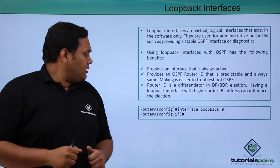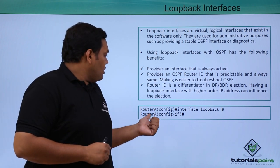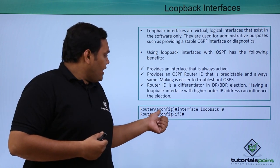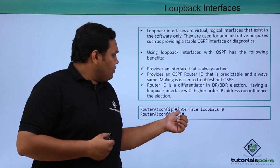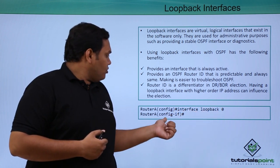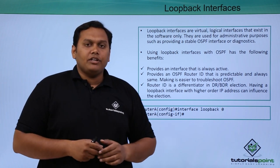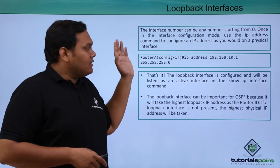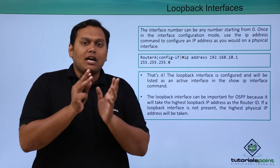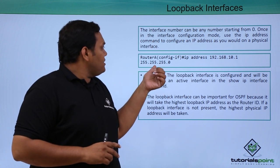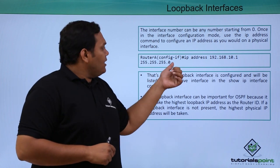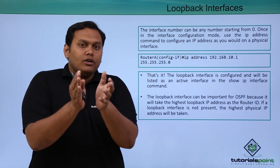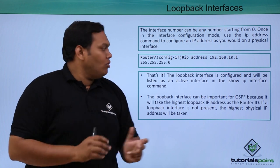Now let's look at how we configure the loopback interface IP address on a router. You enter global configuration mode and type 'interface loopback 0' — the interface number can be any number starting from 0. Once in interface mode, you provide the IP address with the IP address command and wildcard mask. Your loopback interface IP address is now configured.